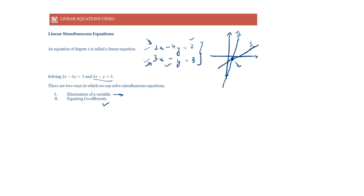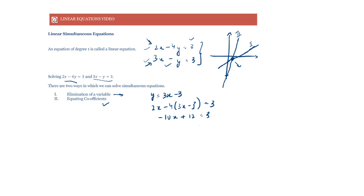Using the equation 3x minus y is equal to 3, we get y is equal to 3x minus 3. We've separated y away. Now in the first equation we substitute this value of y: 2x minus 4(3x minus 3) is equal to 3. Solving this we get minus 10x plus 12 equals 3.